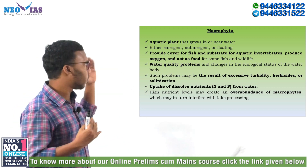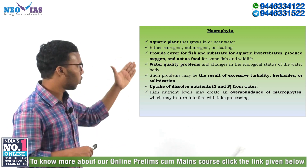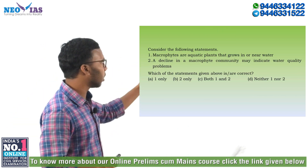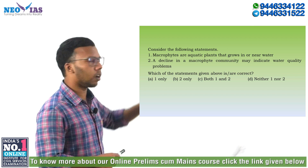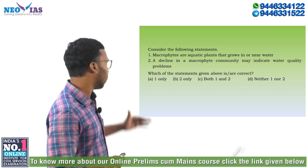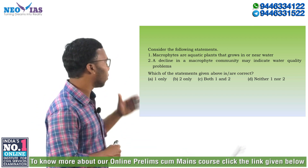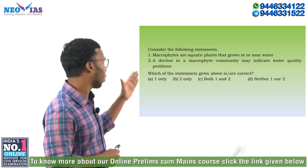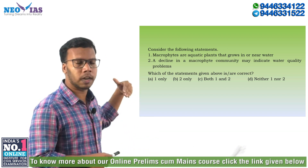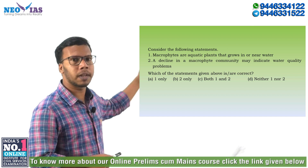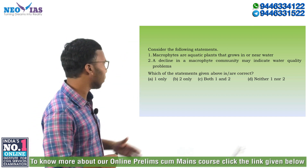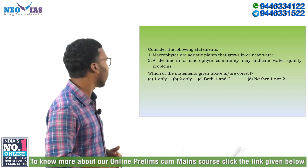Now let us move on to the model question. Consider the following statements: Statement 1 — macrophytes are aquatic plants that grow in or near water — that is a correct statement. Statement 2 — a decline in macrophytes community may indicate water quality problems — that is also correct, because they absorb nitrogen and phosphorus to maintain water quality. So the answer is C: both 1 and 2.